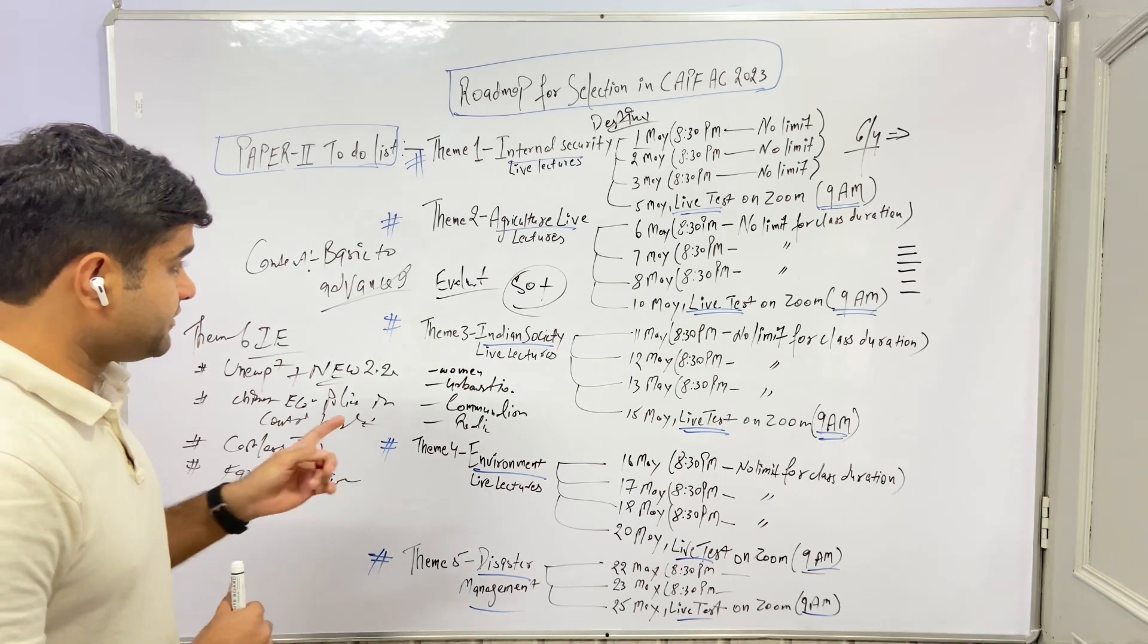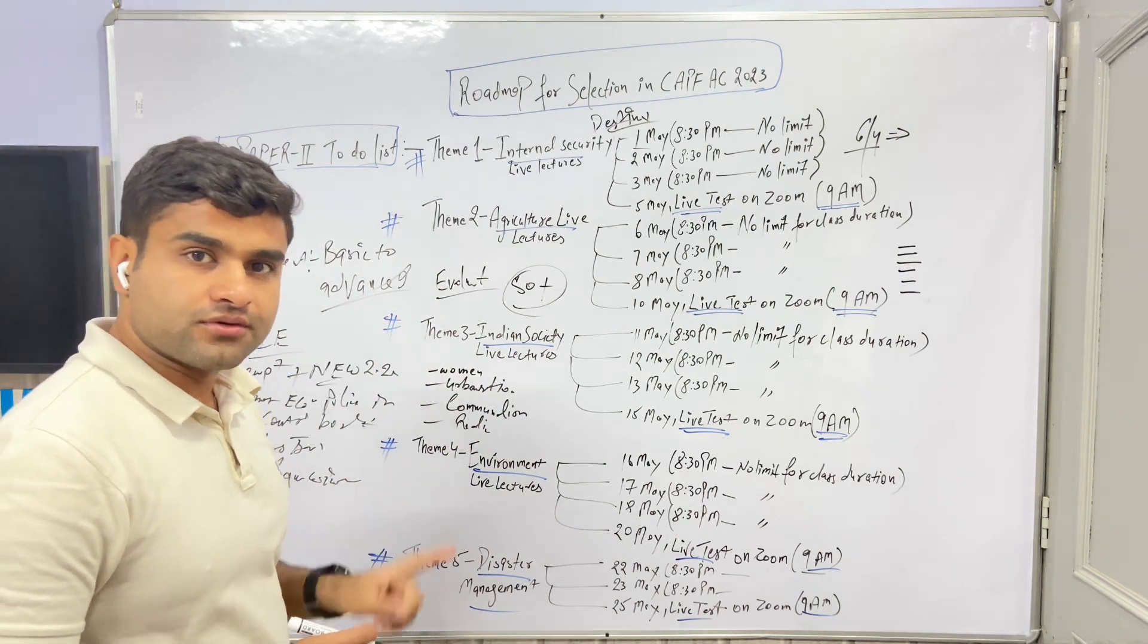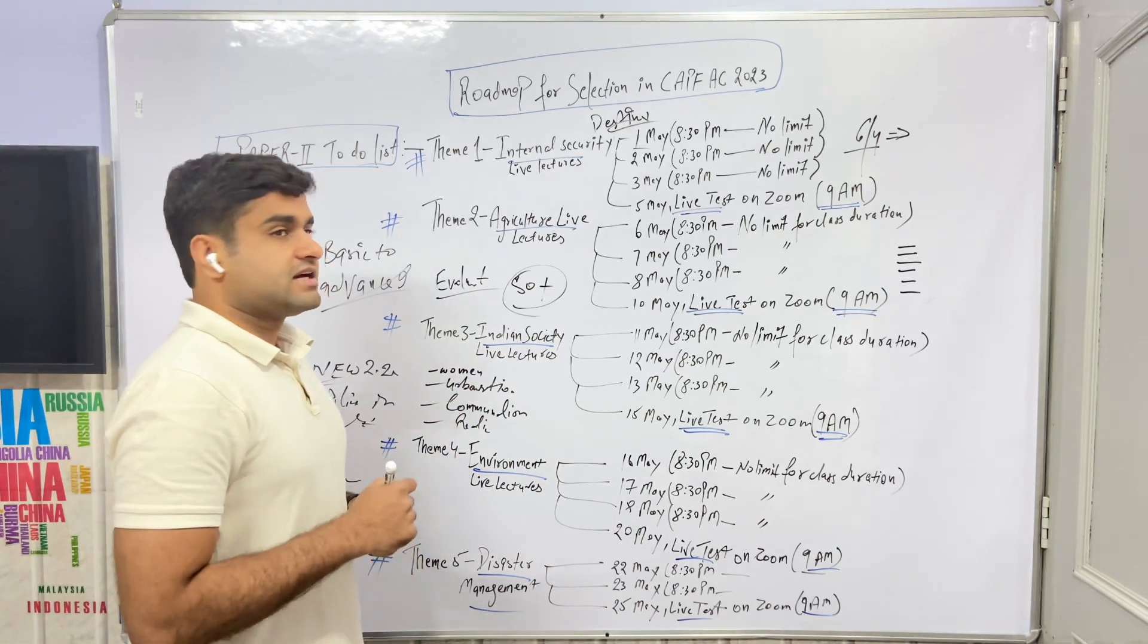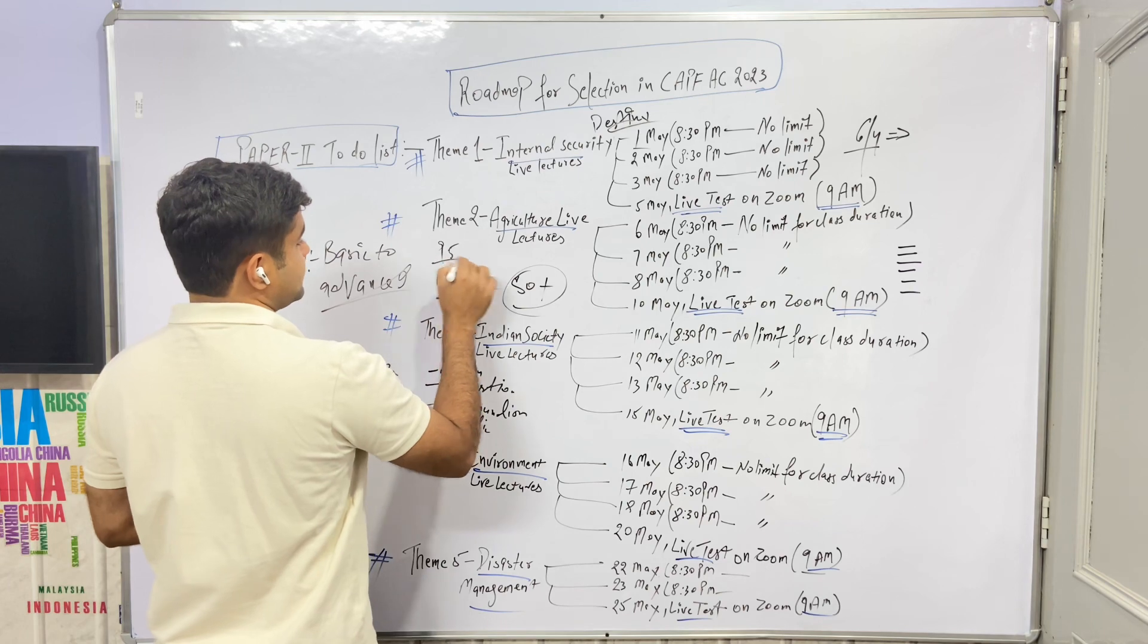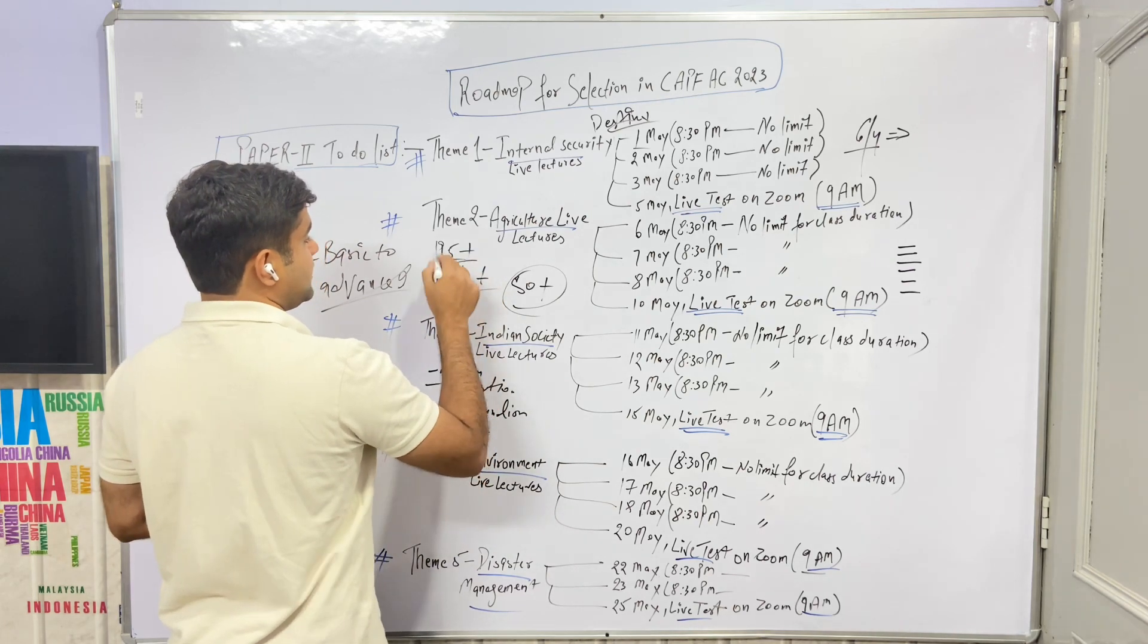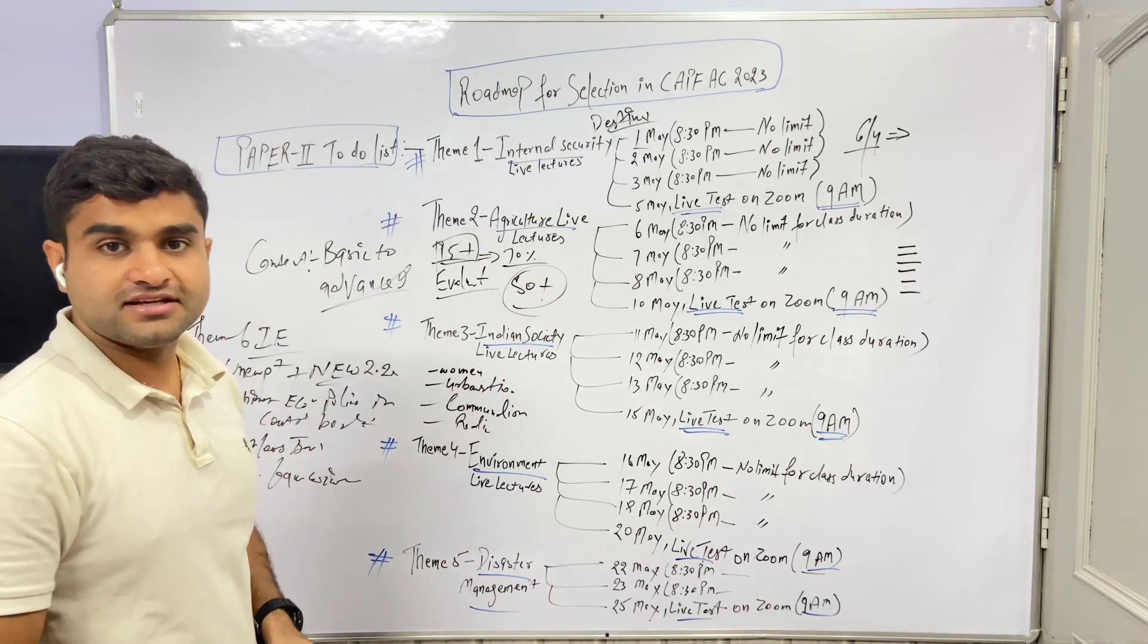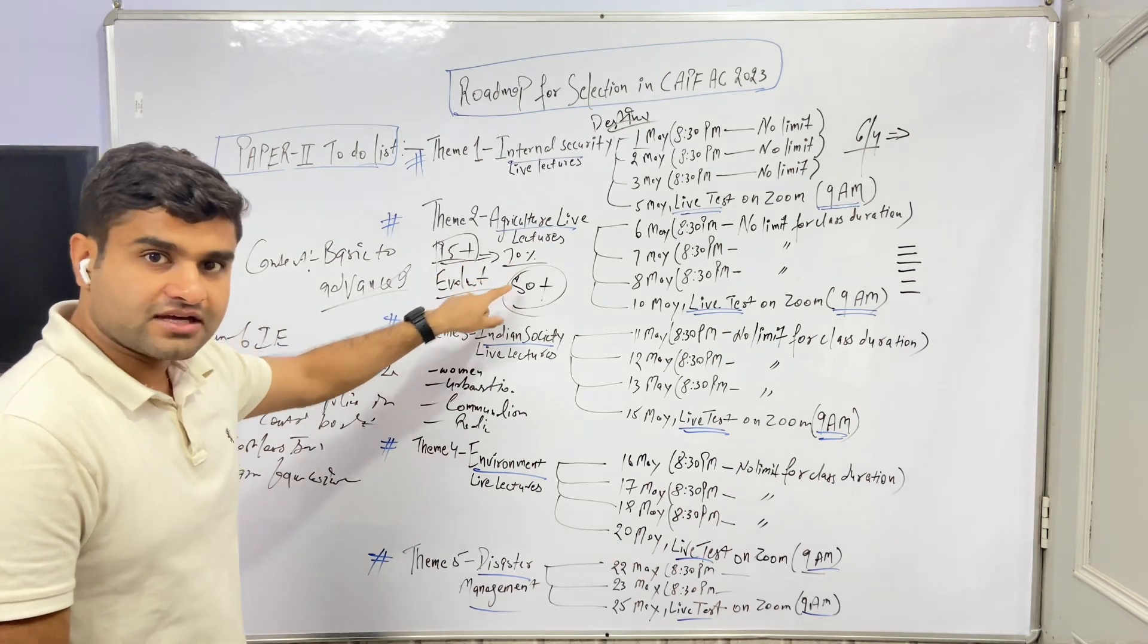I need everyone should attend those classes. Recorded version never - you will be present in class. If I am doing so much effort you should also do that. This batch is the chance of getting selected, chance of getting more than 95 marks. If you think you have to score 95 marks, your probability may increase up to 70% with this batch.